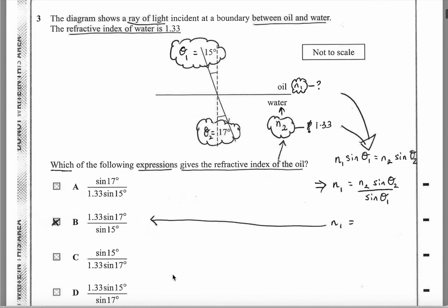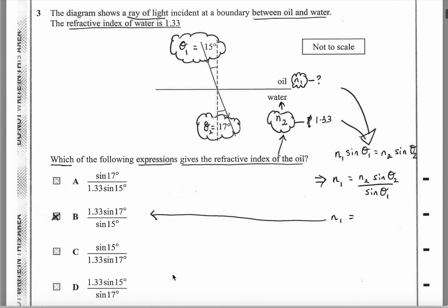Question 3. A ray of light is coming in from the top. I've written on this to show the theta 1 is 15 degrees. The ray of light is going down here from oil into water. The refractive index of water is 1.33. They want us to work out the refractive index for oil.